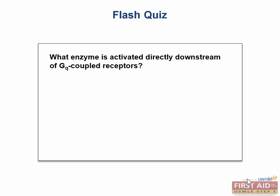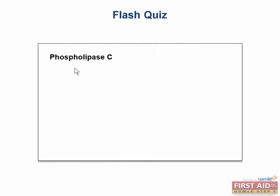Let's do a flash quiz to test what we just learned. What enzyme is activated directly downstream of GQ-coupled receptors? Phospholipase C is activated by the G-sub-Q G protein second messenger, which goes on to split PIP2 into both DAG and IP3. You should know the differences between the GS, GI, and GQ receptor G proteins.